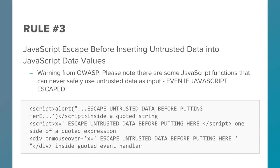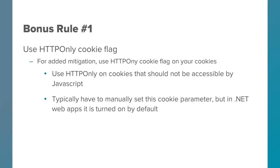Rule 3: JavaScript escape before inserting untrusted data into JavaScript data values. However, here is a big word of warning from OWASP — there are some JavaScript functions that can never safely use untrusted data as input, even if it is JavaScript escaped. It would be wise to steer clear of these so that you're not putting yourself at risk unnecessarily, because it's very easy to make a mistake here.